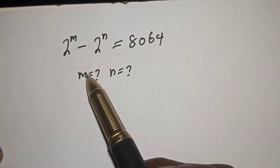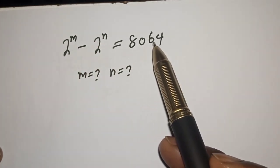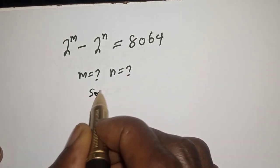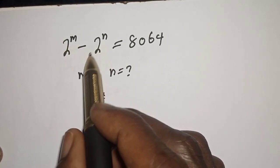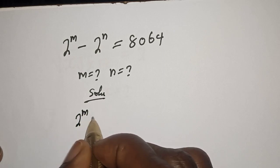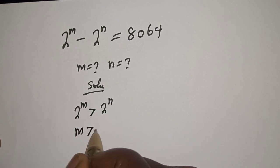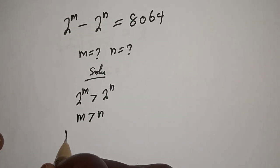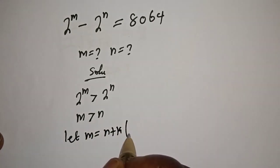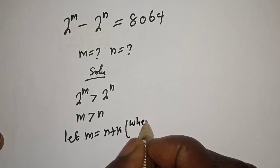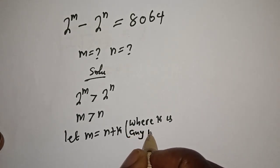Hello, welcome to Math Focus. We need to solve for m and n from the equation: 2 raised to power m minus 2 raised to power n is equal to 8064. Looking at this question, we can see that 2^m is greater than 2^n, therefore m is greater than n. So let's say m is equal to n plus k, where k is any integer.